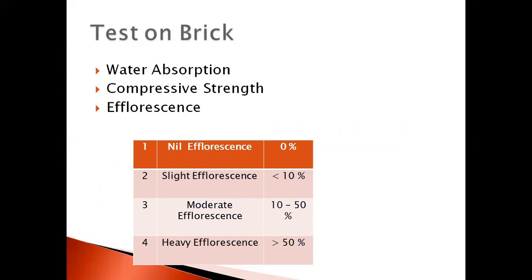The final topic is tests on bricks. There are three main tests: water absorption, compressive strength, and efflorescence. Water absorption: for good quality brick it should be less than 20%. Compressive strength: the brick is placed in a CTM machine and loaded until it cracks — good compressive strength should be 10.5 Newton per mm². Efflorescence is the appearance of gray or white powder patches on a brick surface. To test, take a 150 mm glass dish container, pour 25 mm of water, and place the brick on it for drying.